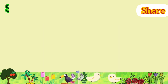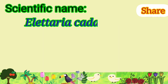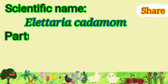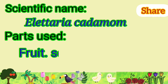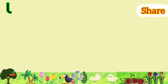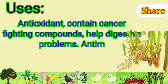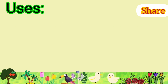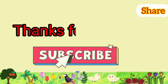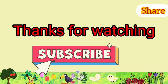Cardamom: its scientific name is Elettaria cardamomum. Parts used are fruit and seeds. It is used as an antioxidant, contains cancer-fighting compounds, helps with digestive problems, and has antimicrobial properties. Thanks for watching. Do subscribe and like.